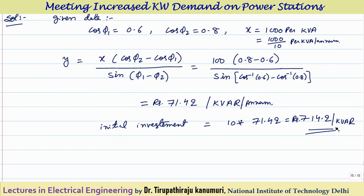So the limiting initial investment is 10 times this, giving 714.2 Rs per kVA. Up to this cost of power factor improvement equipment, it is economical to go for power factor improvement. If the cost of your power factor improvement equipment is greater than this, it is not economical; if it is less, it is better to go for power factor improvement. This is how we can compare the economics. I hope this concept is completely clear. If you have any queries, leave your comments below and I will answer them. Thank you very much.